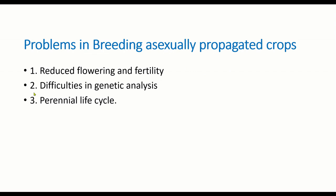Difficulties in genetic analysis: the genetic constitution of a crop plant is determined by homozygosity and heterozygosity, but in asexually propagated crops it is difficult to identify genetic constitution using hybridization methods. It is difficult to identify homozygosity and heterozygosity in asexual reproduction. Most asexually reproducing crops have a perennial life cycle, so they take a long time to complete their vegetative and reproductive stages, which is a disadvantage.